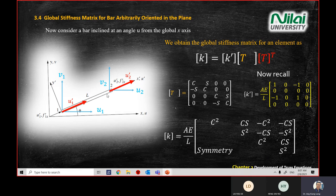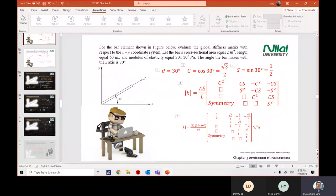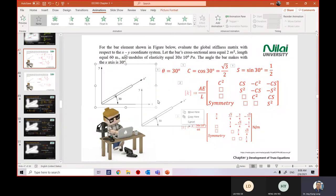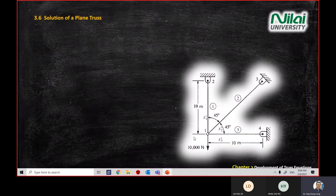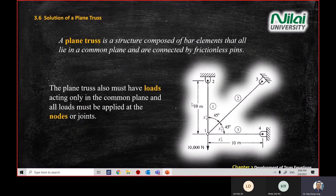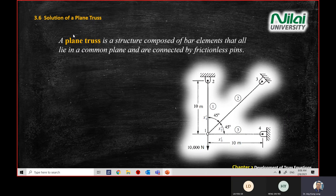Today we're going to look at the assembly of a bar, which we call a truss. We'll look at this example — a plane truss, which is a 2D system. Maybe next week we'll use ANSYS to prove the results on the truss system.